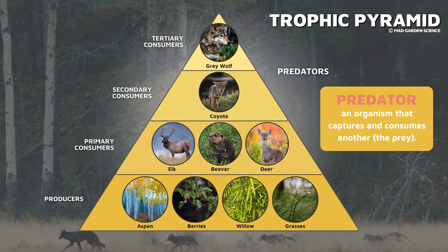Keystone Species are commonly divided into three types: Predators, Mutualists, and Ecosystem Engineers.